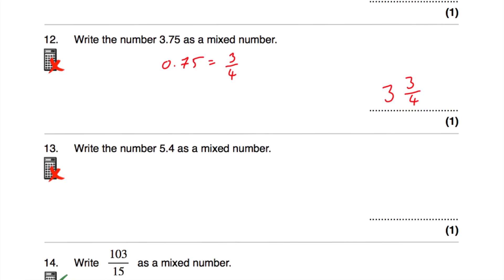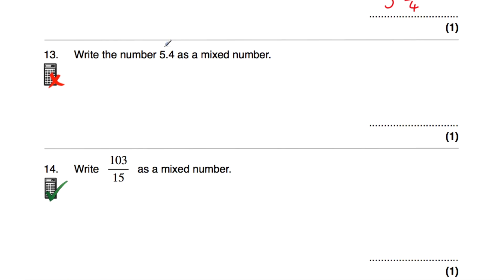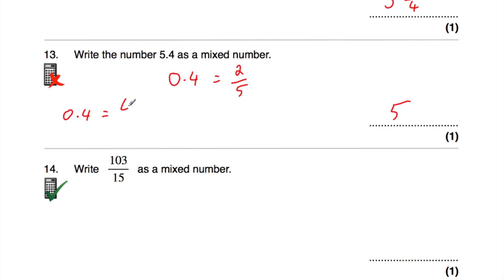Question number 13: write the number 5.4 as a mixed number. We know it's going to be 5. In terms of the 0.4 — 0.4 is 2 fifths. You might remember that because a fifth is 0.2, so 2 fifths would be 0.4. Another way to think about it: 0.4 is 4 tenths, and 4 tenths cancels down to 2 fifths. So the answer is 5 and 2 fifths.